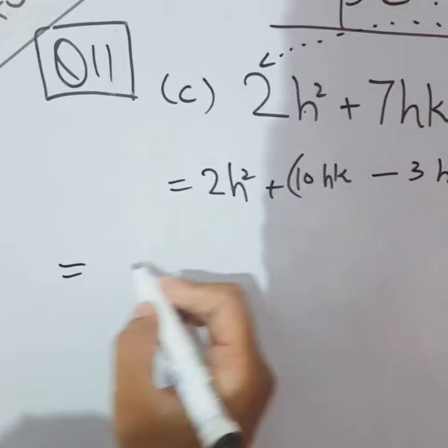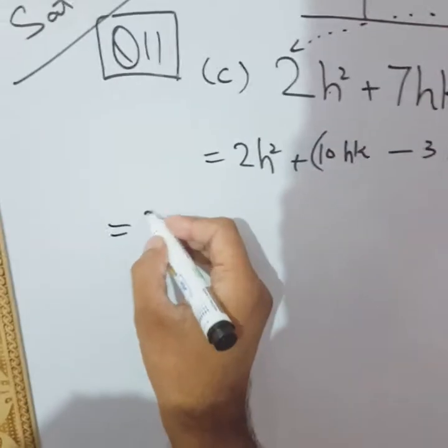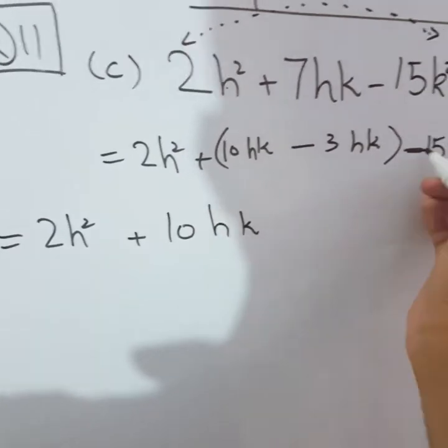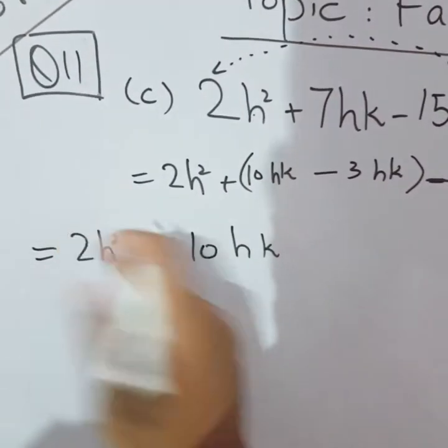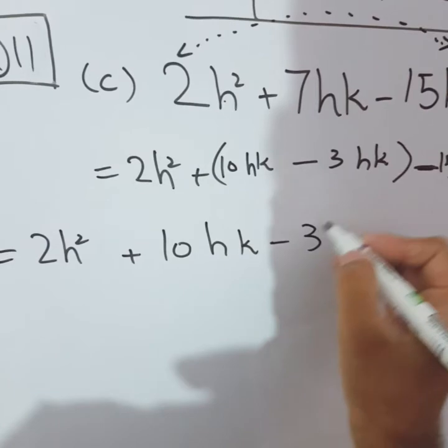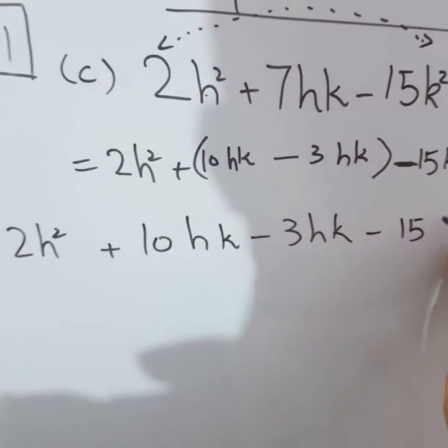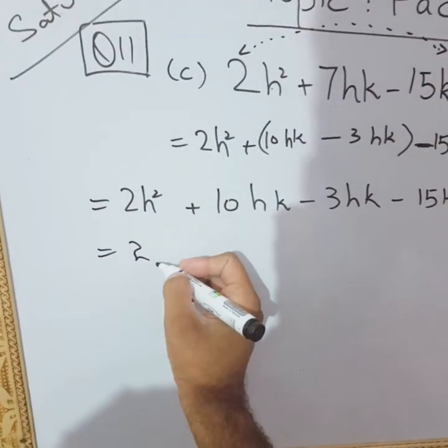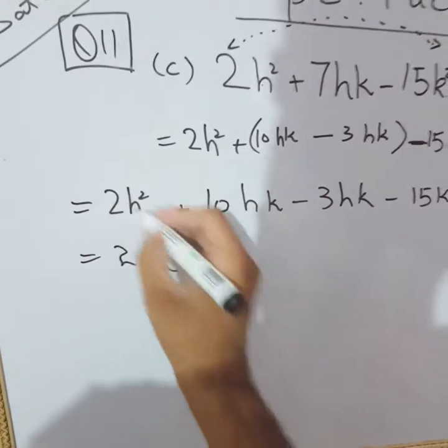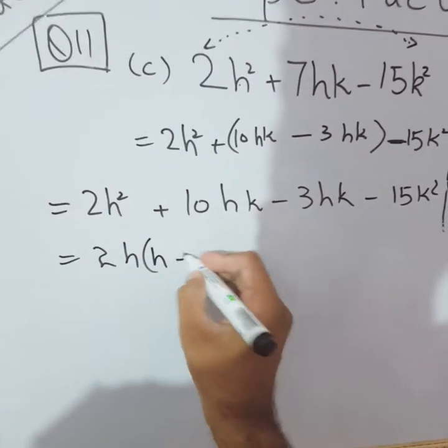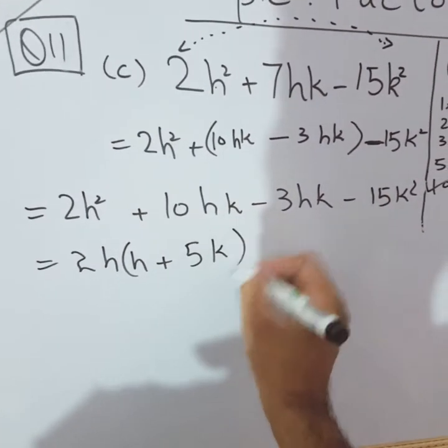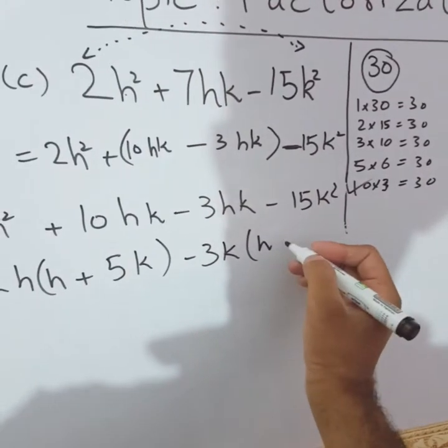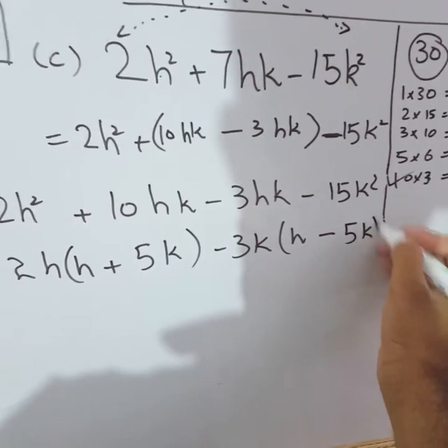Now you will open the bracket. 2h² will stay in its place. Because of the plus sign, the signs inside the bracket won't change. The difficult work is done up to this step, ahead it's easy. Bracket opens, -15k² also stays in its place. Here 2 is common and h is also common. So one h remains inside, 2 times 5 is 10. H was common so it's written. 3 is common and k is also common. h remains inside and 3 times 5 is 15, and k also remains.